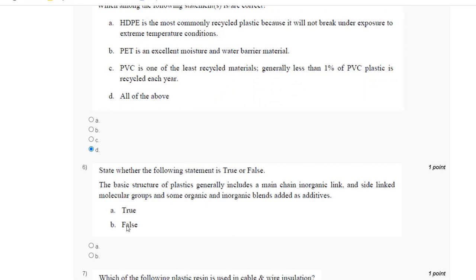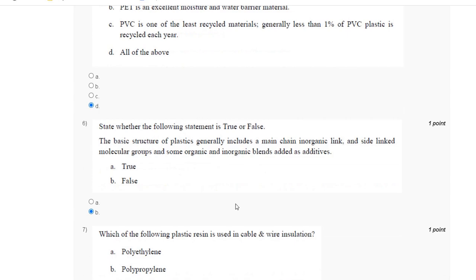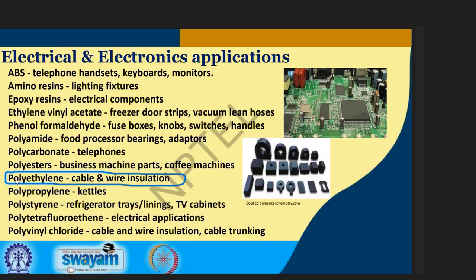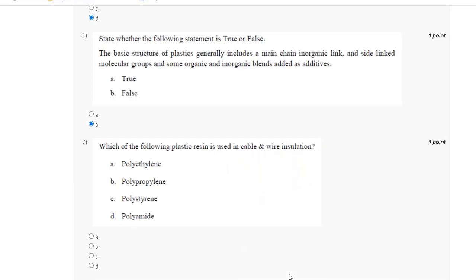Question number seven: which of the following plastics is used in cable and wire insulation? Polyethylene is used in cable and wire insulation. The correct answer for question number seven is A, polyethylene.